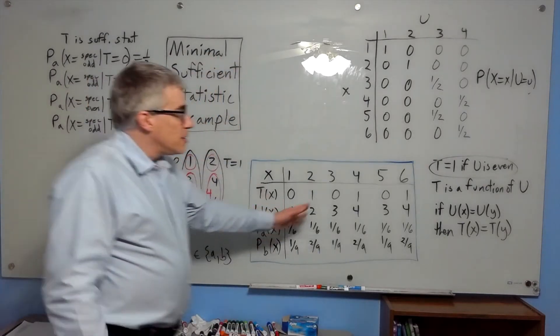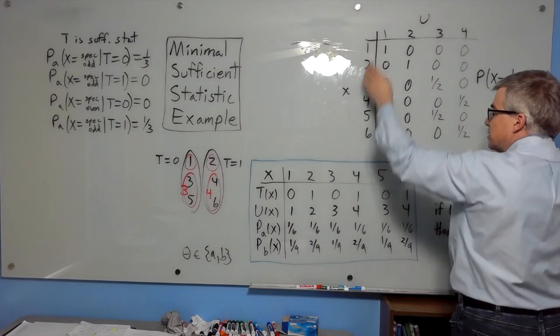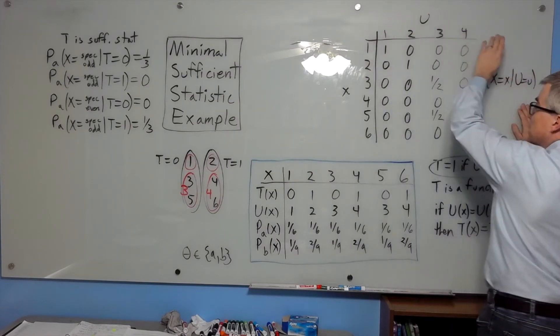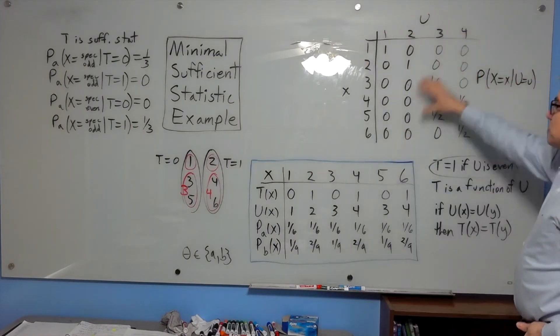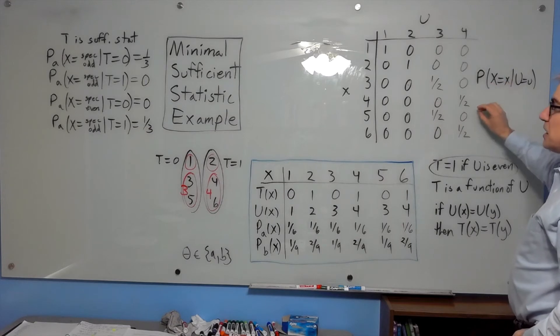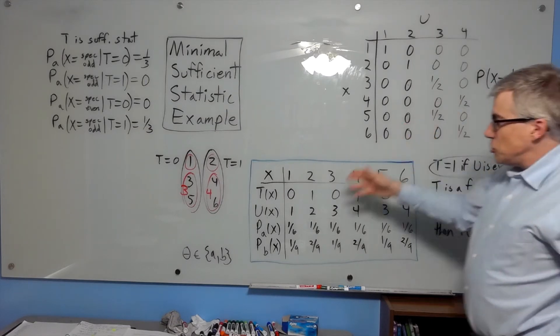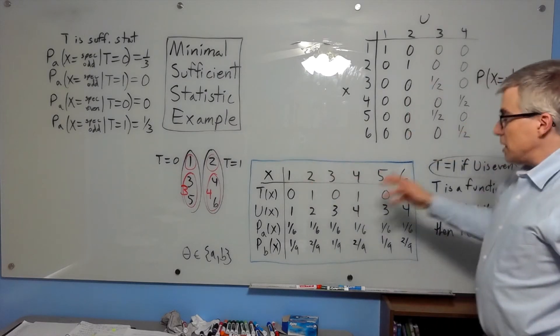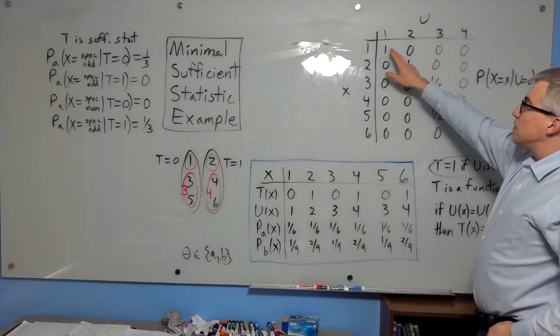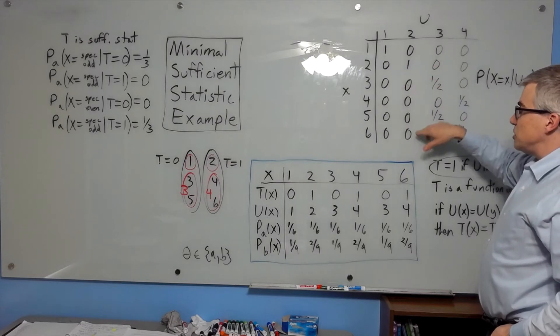U is a little more elaborate, so I made this grid. x indicates the row, u indicates the column, and these numbers represent the probability of x given the statistic. And since u is 1, 2, 3, 4 when x is 1, 2, 3, 4, then these are simply ones here, and the rest of the columns are zeros.